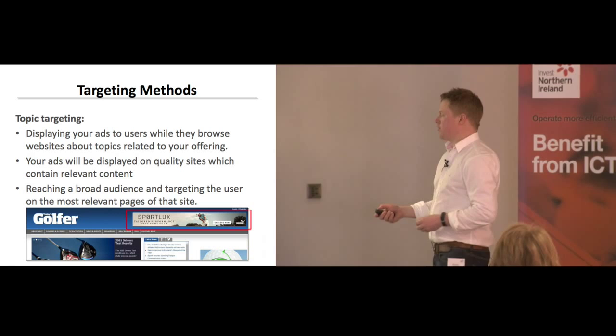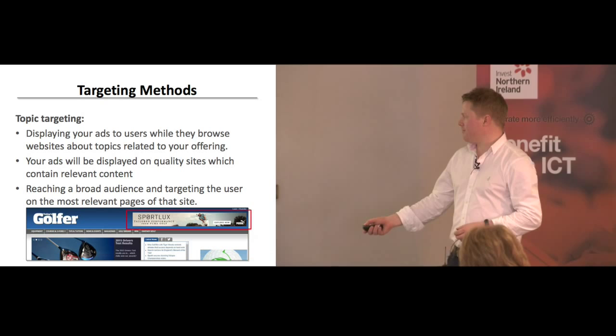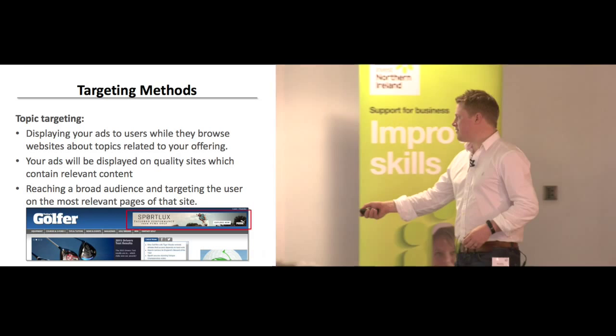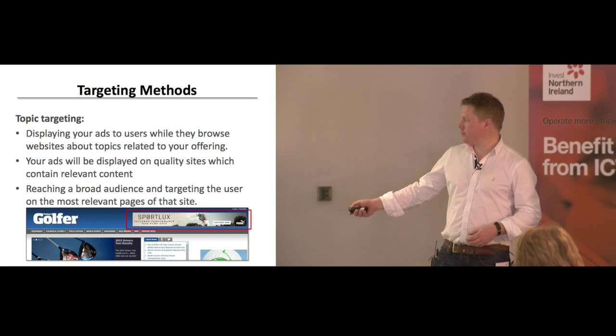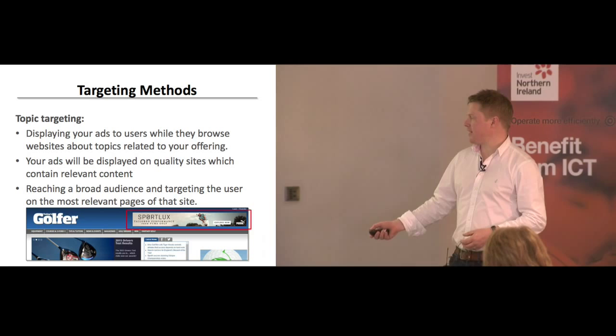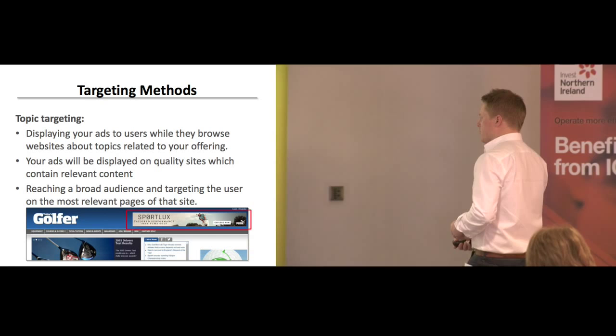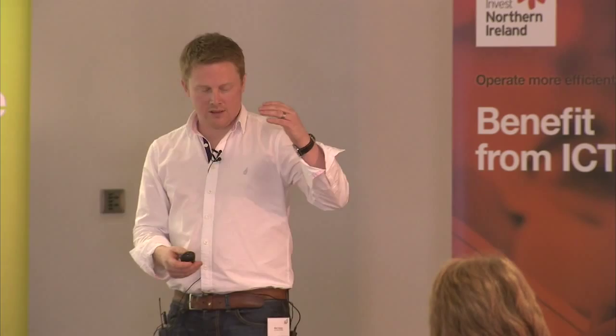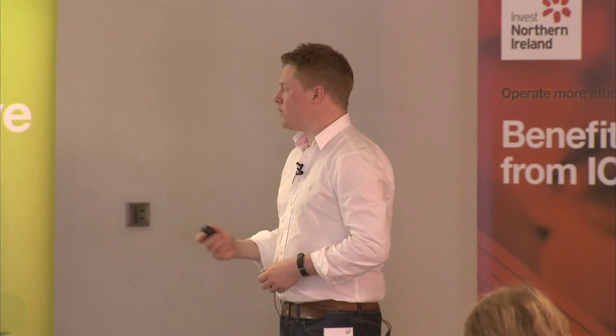They reach a broad audience and target the user on the most relevant pages of the site. So, for example, on Today's Golfer, down there it says 'equipment.' Puma probably should have done better topic targeting and put their ads under equipment. If I'm reading about courses, you might have an ad for the local golf course. Under tips and tuition, you might find a golf pro. You don't just have to stick ads site-wide — say you're advertising the local party bus. Are you going to advertise that above the obituaries? Pretty bad taste. So you can actually pick where you want these ads to appear — maybe under the entertainment section rather than that section.